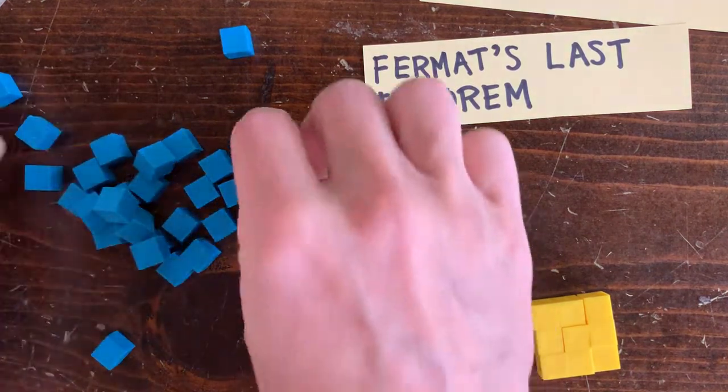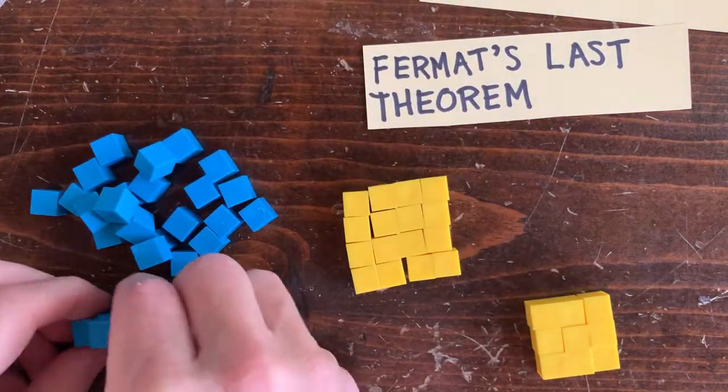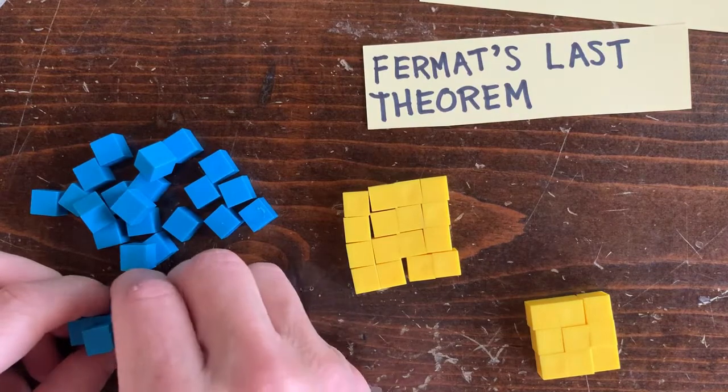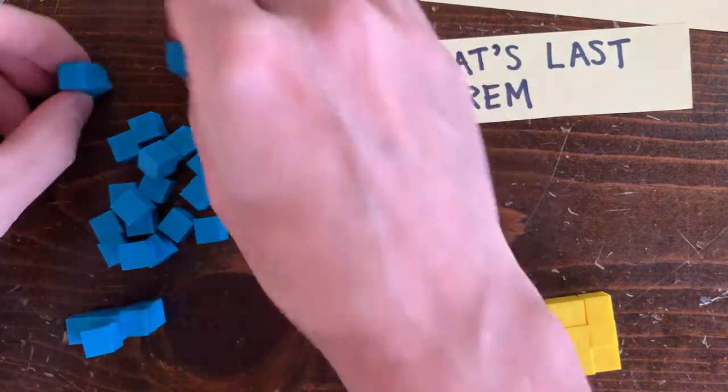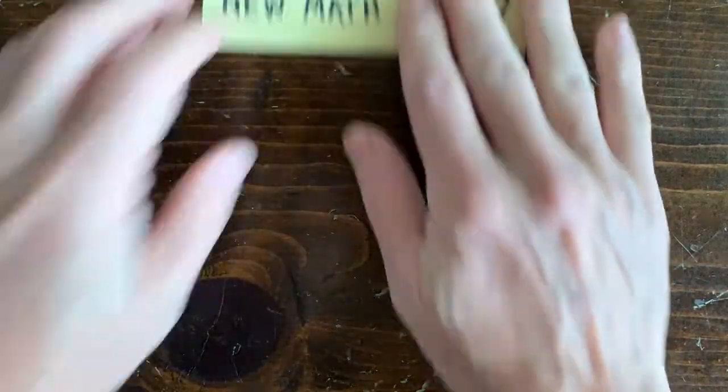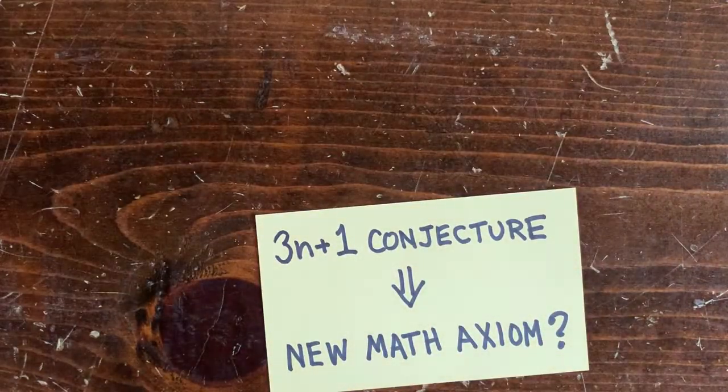We could go looking for a huge counterexample. Some cube that could be broken down into two smaller cubes but we'd never find it. Anyway, let's not add the 3N plus 1 conjecture to the list of mathematical axioms yet.